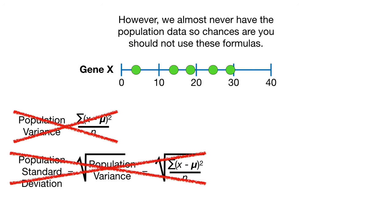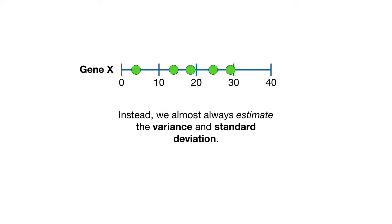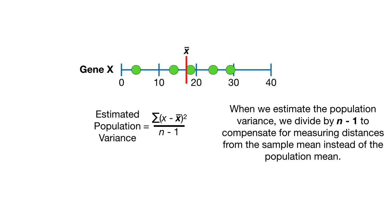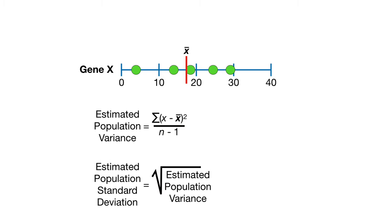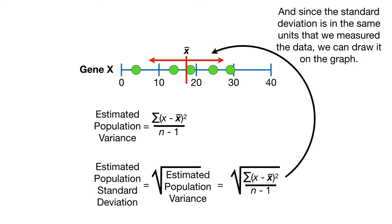However, we almost never have the population data, so chances are you should not use these formulas. Instead, we almost always estimate the variance and standard deviation. When we estimate the population variance, we divide by n minus 1 to compensate for measuring distances from the sample mean instead of the population mean. And the estimated standard deviation is just the square root of the estimated population variance. Since the standard deviation is in the same units that we measured the data, we can draw it on the graph.